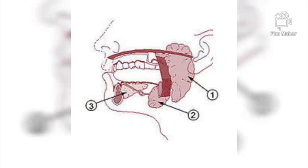Salivary glands — the mouth contains three pairs of salivary glands. These glands secrete saliva, which contains mainly water to soften the food. Besides water, there is also an enzyme called ptyalin, whose main function is to break down starch into a simpler form of carbohydrate from which we derive energy.